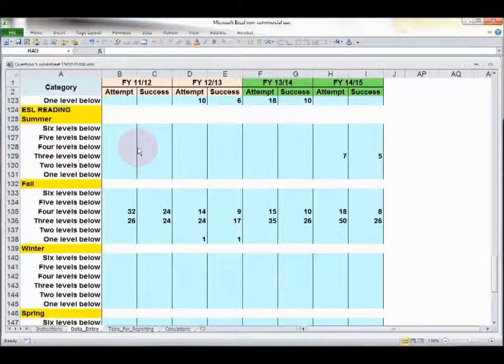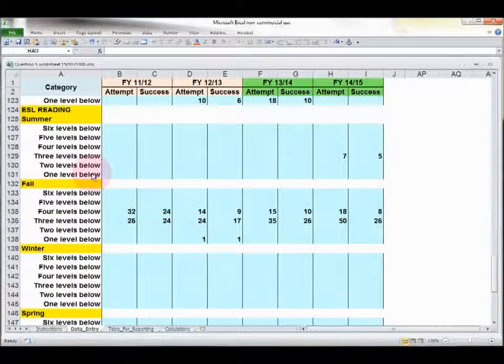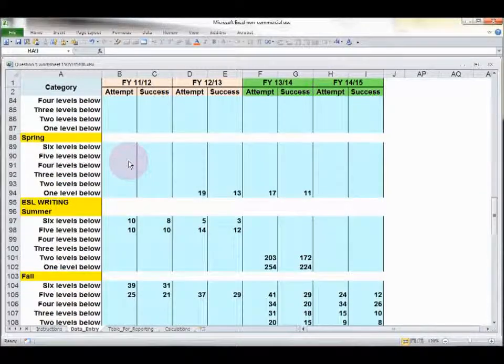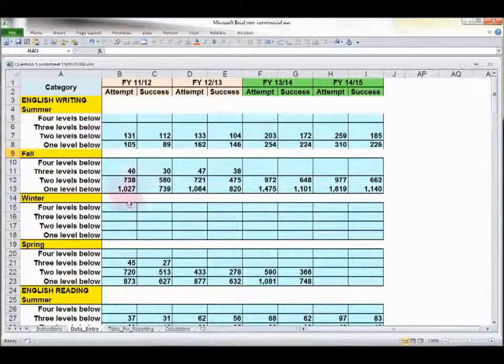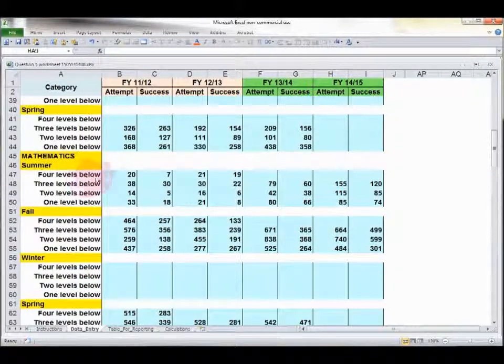Notice in the case of the ESL courses, you can go six levels below to one below. If you have levels seven or eight, please combine them with level six. For the others, such as English Writing, English Reading, and Mathematics, will be levels one through four.